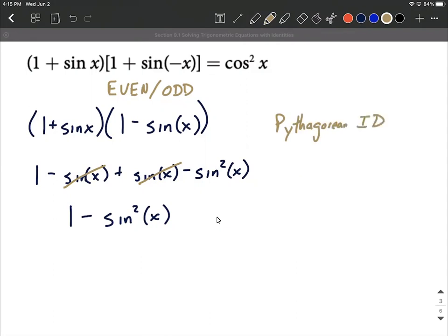With the Pythagorean identity, we can say that's cosine squared of x plus sine squared of x equals 1. Whenever you have something squared, sine squared or cosine squared, it's a good idea to refer back to this identity.